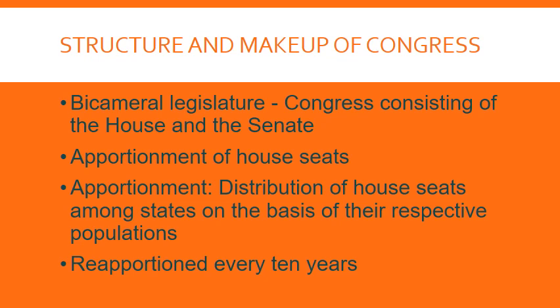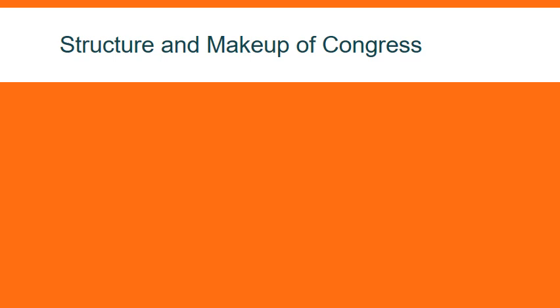Apportionment is basically the distribution of House seats based on population. When the forefathers constructed this nation, they came to an impasse. The House favored larger states — the Virginia Plan — while the Senate favored smaller states. That's why each state sends two people to the U.S. Senate regardless of population, whether it's 300,000 or 40 million. California's delegation is two U.S. senators plus 53 House members — 55 seats total. We reapportion every 10 years through the census, which counts population. The Supreme Court struck down a proposed citizenship question, since the census goal is simply to count heads for House apportionment.